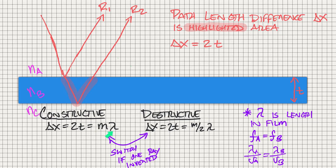If this is one wavelength difference, or one wavelength in length, then that's going to be constructive. If it's two wavelengths, three, four, and five wavelengths, those are all going to be constructive situations.